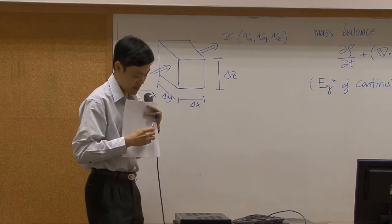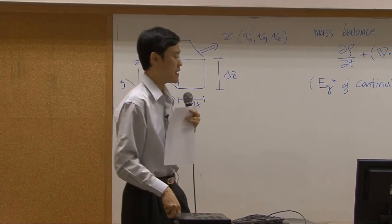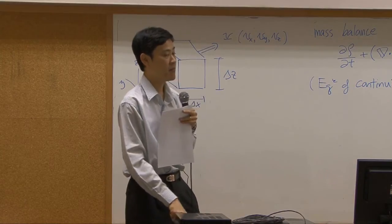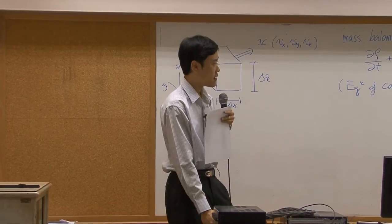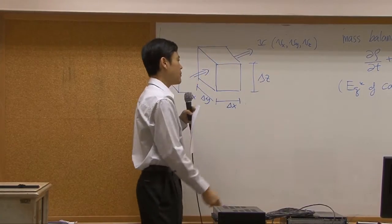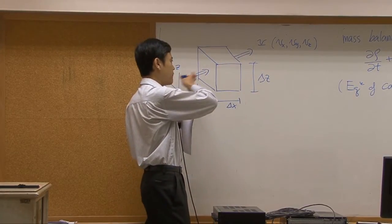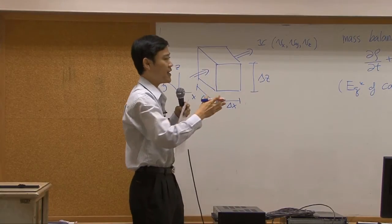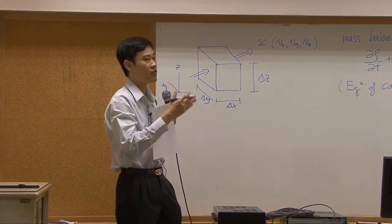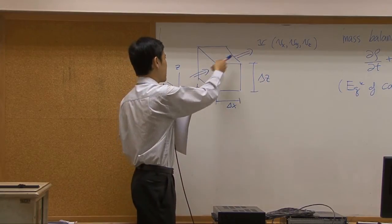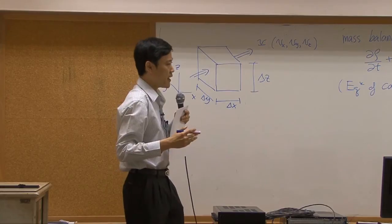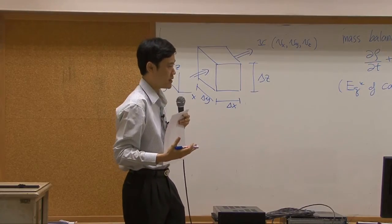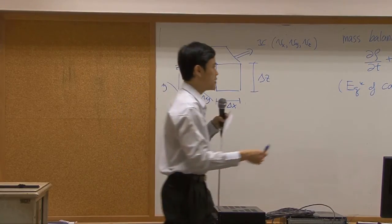You will have the dimension of the shell to be delta x, delta y, delta z. And last time we talked about mass balance. If we construct the mass balance around the shell here, remember, right now we have a fluid flowing into the shell in any general direction. The vector velocity can be in any direction.